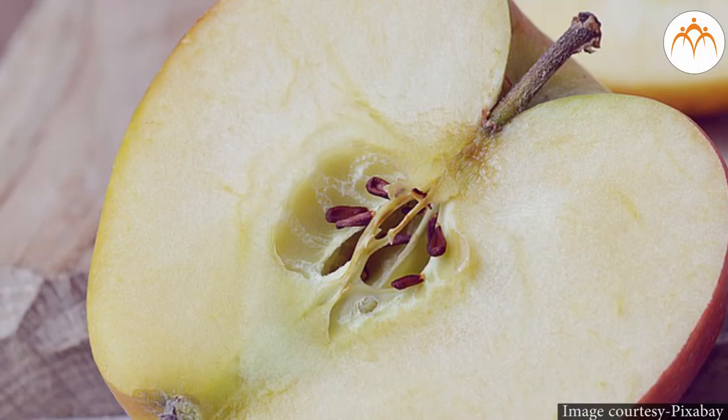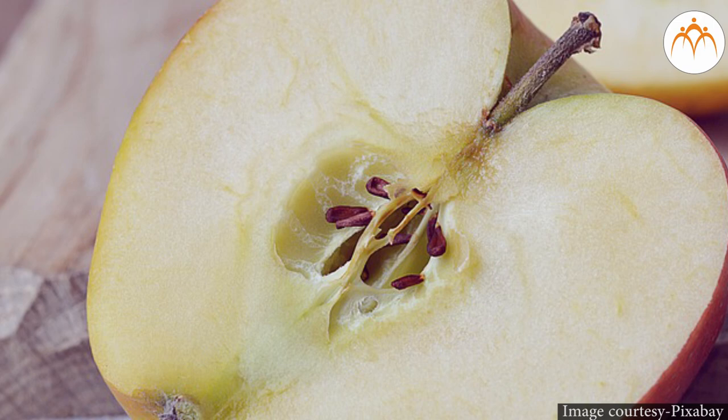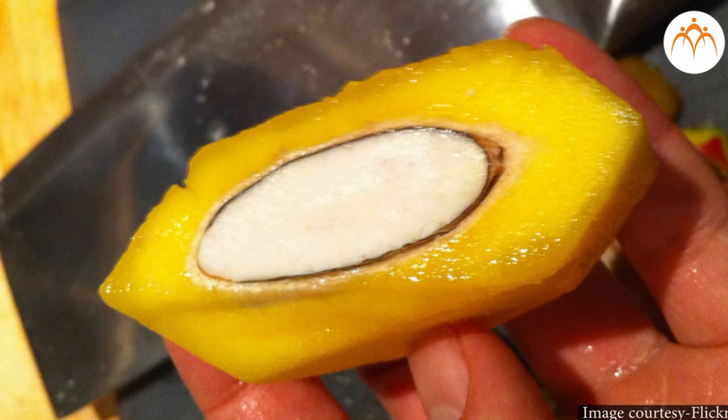Now tell me when we eat mango, apple, tomato, where are the seeds present? Seeds are inside the fruits. So, in case of fruits we eat, usually seeds are enclosed in fruits. All these fruits have different colors, smell, taste.